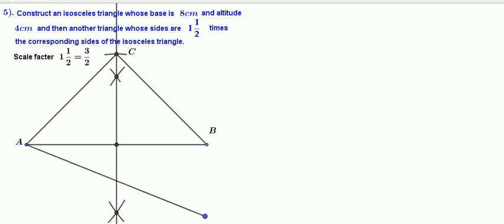Draw a line segment from point A. Divide it into three equal parts because three is the bigger number in the given scale factor. The numerator and denominator, the bigger number is three. Let us divide it into three equal parts. Name them as A1, A2, A3.